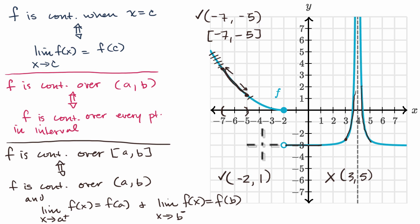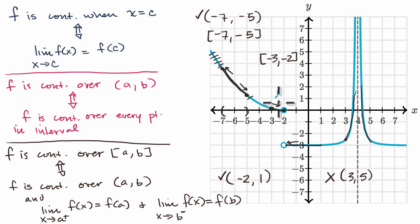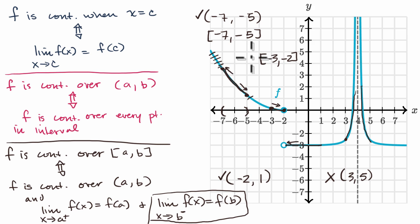Let's look at the closed interval from negative three to negative two. I did not have to pick up my pencil — I'm including negative three and getting all the way to negative two. At negative three, the function is just plain old continuous; the two-sided limit approaches the value of the function. But at negative two, the two-sided limit does not exist: when you approach from the left it looks like you're approaching zero, and f of x equals zero; when you approach from the right it looks like f of x is approaching negative three. Even though the two-sided limit does not exist, we're still good because the left-handed limit does exist and approaches the value of the function. So we actually are continuous over that interval.